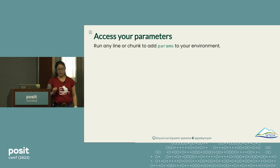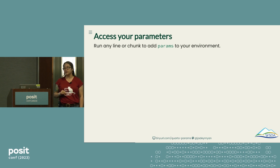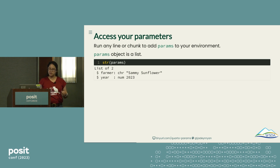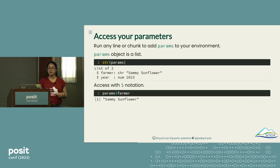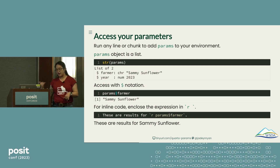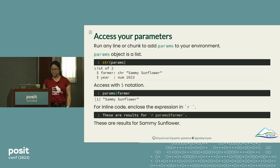How do you access your parameters? If you're working in RStudio interactively, you can run any line or code chunk, and this adds a `params` object to your environment. Because this is just a list object, you can use standard list notation and access parameters with `params$farmer`, which would give you something like "Sammy Sunflower." You can also use parameters for inline code: if you enclose your expression in backtick-r your-expression-backtick, it will dynamically render whatever your parameter is — for example, "These are results for params$farmer: Sammy Sunflower."